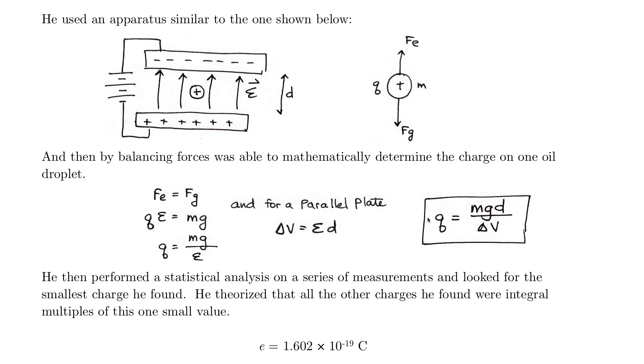So he looked at all these things and said, wait a second, there's a common value here, there's a common integer, a common multiple. And all of those common multiples, basically the one common multiple, is 1.602 times 10 to the minus 19 Coulombs. And lo and behold, he realized that is the charge on one electron.